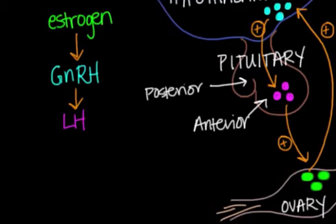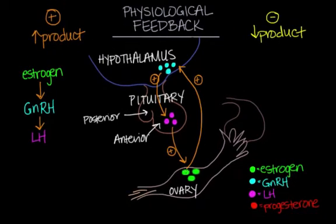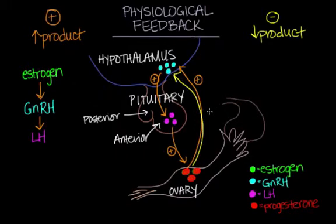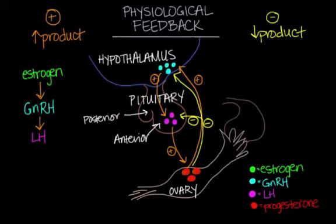When high amounts of LH are produced in the blood, another hormone will wake up — progesterone. Progesterone is triggered when it senses that LH levels are too high, and it's secreted from the corpus luteum after ovulation. After ovulation, progesterone will trigger the GnRH production in the hypothalamus to turn off, and will also trigger LH production in the anterior pituitary to turn off. This is negative feedback — since the levels of product are becoming too high in the blood, something needs to cause an inhibition of those products so they don't accumulate. That's why progesterone comes in and turns off the positive feedback process and decreases the products.